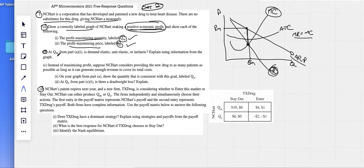They're not even asking us to draw in the profits or show it or anything. They then go to B at QM, at this quantity from part A, is demand elastic, unit elastic, or inelastic? Explain.